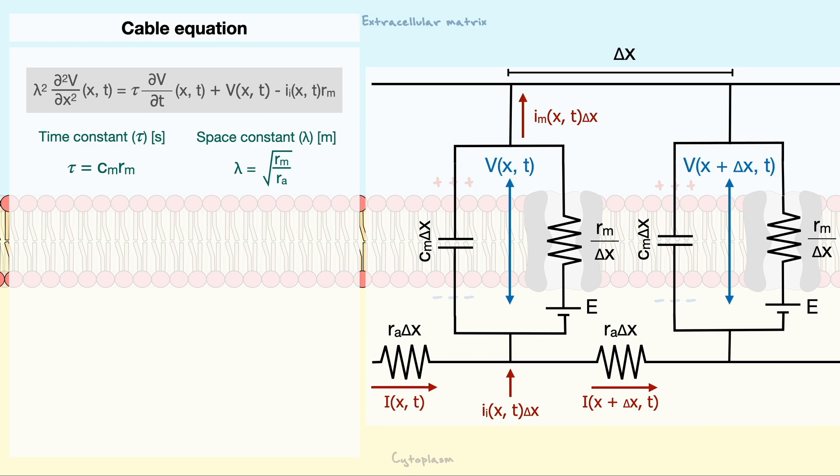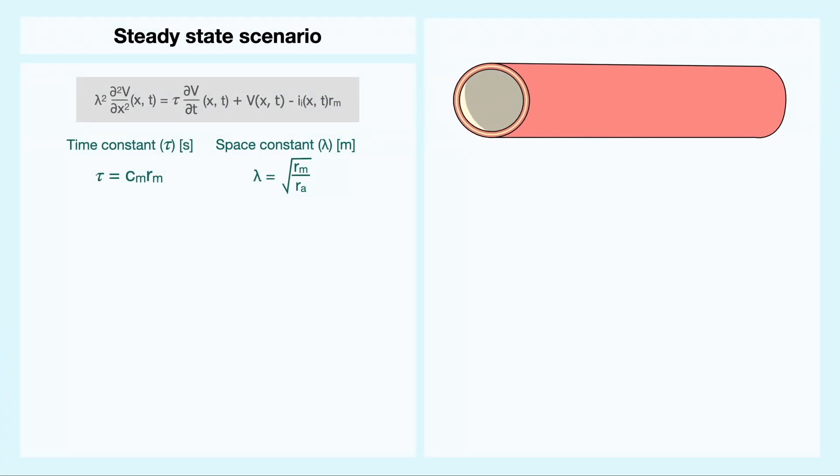Nonetheless, to get a good feeling of the equation and the space constant, we can consider a simpler scenario where we disregard time otherwise known as the steady state scenario. In this scenario, we will have to make a few assumptions. First, we assume that the length of our cylinder is infinite.